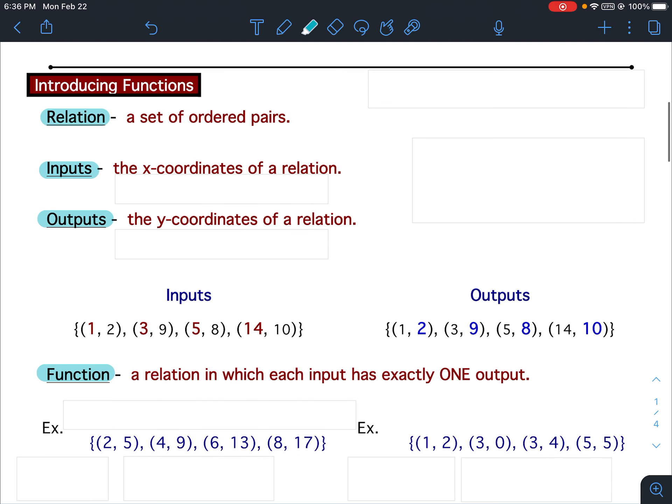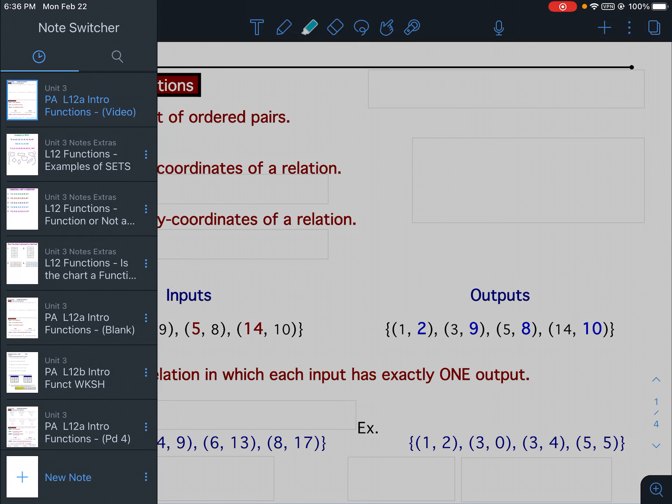A relation is a set of ordered pairs. Again, a relation is a set of ordered pairs. Well, you should know what ordered pairs are because you have to use ordered pairs. When we were plotting points, when we were graphing, we used ordered pairs and so forth. But one word that you might not know in that definition is the word set. So let's take a look at some examples of sets.